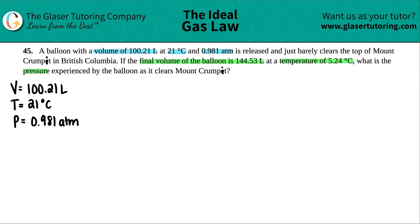Now it's just clearing the top of Mount Crumpet and the volume has changed. The final volume of the balloon is now 144.53 liters. So I now have a new volume: 144.53 liters. And this volume is occurring at a new temperature of 5.24 degrees Celsius. And they're asking for that pressure. So what is that pressure once it clears Mount Crumpet?